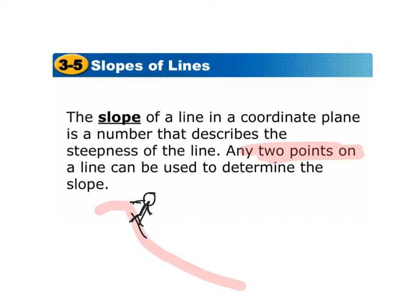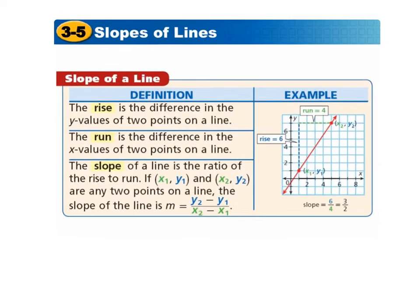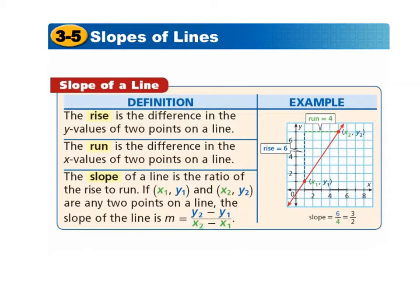Any two points on a line can be used to determine the slope. The rise is the difference in y values of two points on a line, and the run is the difference in the x values of two points on a line. The slope of a line is the ratio of the rise to run.